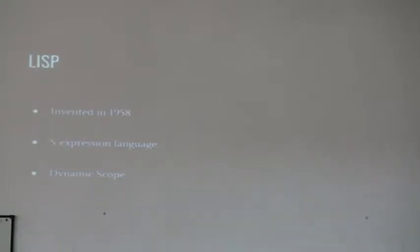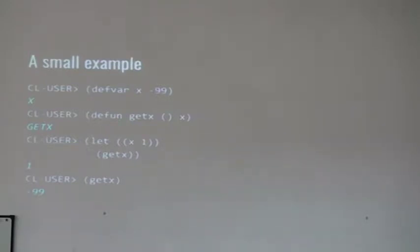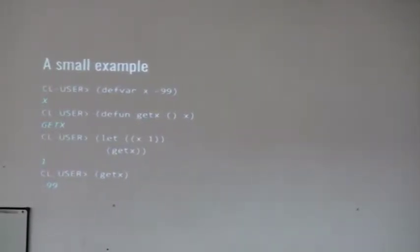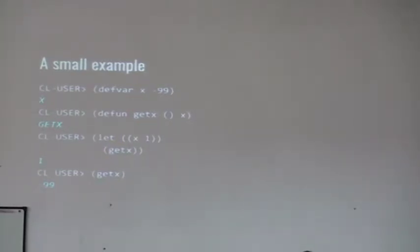So basically, we could redefine the same variable in different scopes and shadow the original value that it had in the more global scope previous to that. In this little example, we can see what effects it could have. We define a variable x with a value of minus 99 on a global scope. Then we define a function that brings any x variable that it finds. And then, in an inner scope with the let command, we define the value of x as 1. If we evaluate get x inside that scope, the value that it brings back is 1 because it's at the top of the stack.